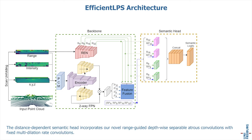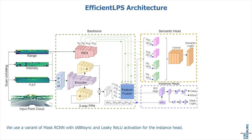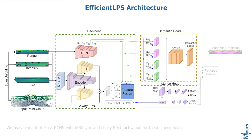The distance-dependent semantic head incorporates our novel range-guided depthwise separable atrous convolutions with fixed multi-dilation rate convolutions. We use a variant of Mask R-CNN with IBN, sync batch norm, and leaky ReLU activation for the instance head. We dynamically fuse the outputs of both heads using the panoptic fusion module, which is supervised by our proposed panoptic periphery loss function.